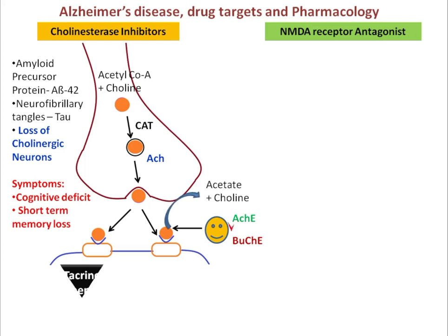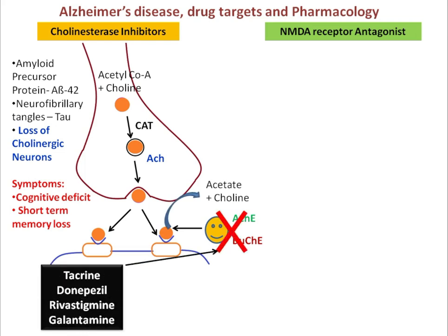Drugs targeting AChE and BuChE include tacrine, donepezil, rivastigmine, and galantamine. By inhibiting these enzymes, the overall amount of acetylcholine remaining at the site of action is increased, and further conversion to acetate and choline is blocked by these drugs.